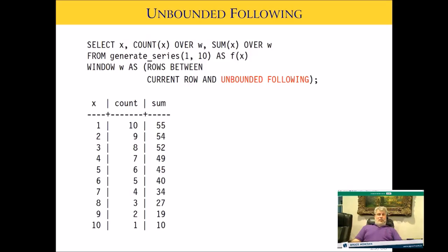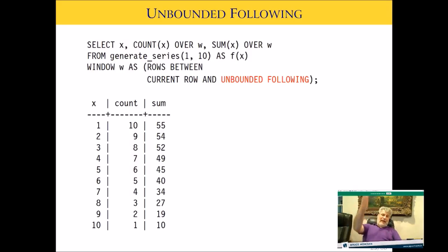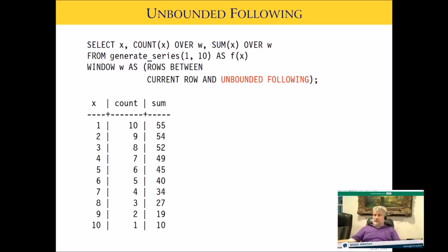Now I've completely flipped it: ROWS BETWEEN CURRENT ROW AND UNBOUNDED FOLLOWING. I'm saying take the current row and go all the way to the end. The numbers are all flipped — counting from the current row to the end gives 10, 9, 8... 1. The sums also flip: row 1 adds all remaining rows giving 55, row 2 gives 54, and so forth decreasing.